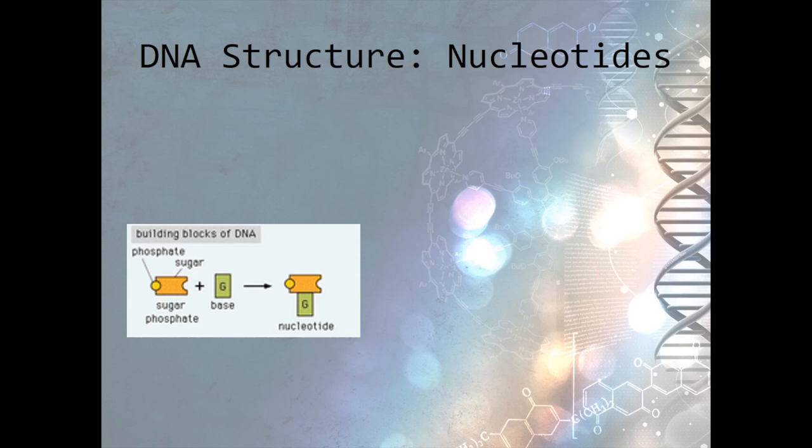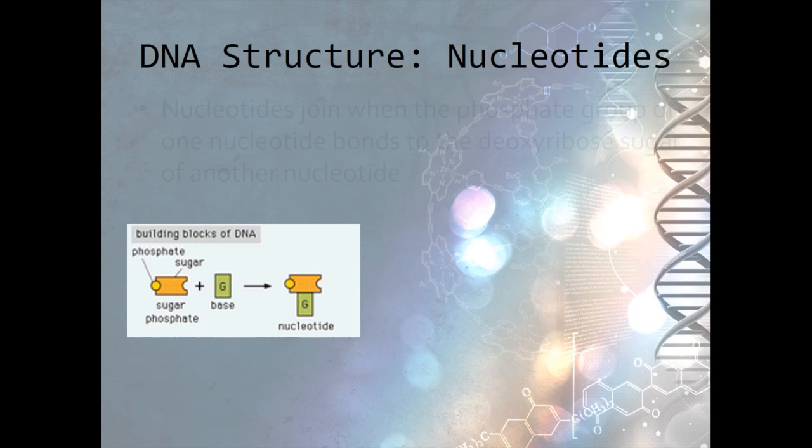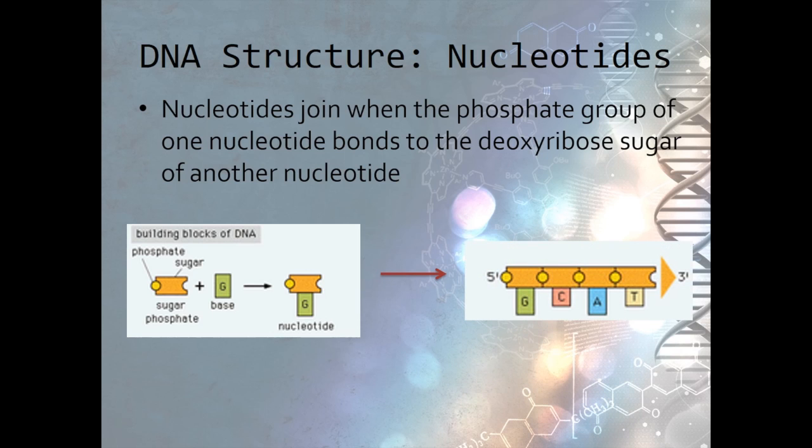So far we've looked at the individual nucleotides, but if we remember the DNA structure picture from before, DNA is formed from chains of nucleotides. These chains are formed when the phosphate group of one nucleotide joins with the deoxyribose of another nucleotide. Then we get a single chain of nucleotides that looks like the diagram on the right.